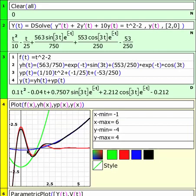The yp, the blue solution, is a parabola. And the y converges to the yp. And the yh goes to zero.